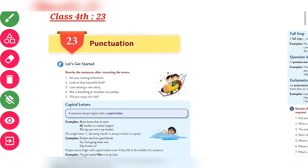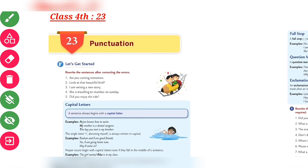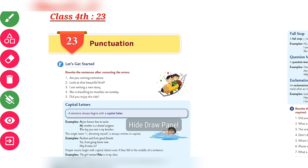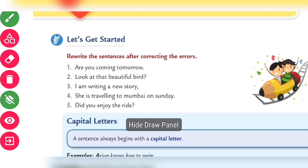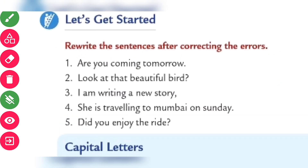Hello students. In today's class we're going to discuss chapter number 23 of class 4th, that is Punctuation. We'll see the very first page: rewrite the sentences after correcting the error.